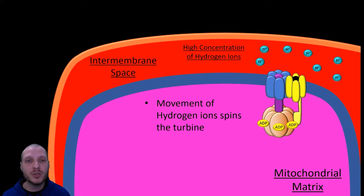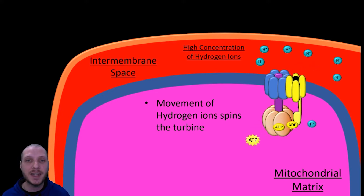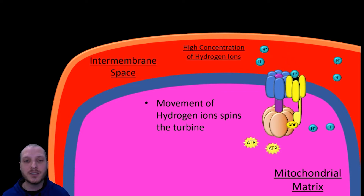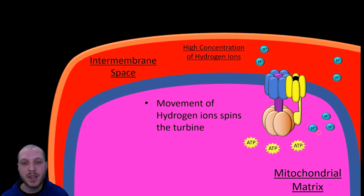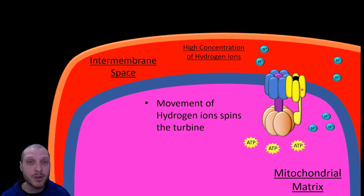Instead of water, we use a high concentration of hydrogen ions on one side of the inner membrane. When an opening is created, these hydrogen ions naturally move through it, powering the turbine and adding that phosphate molecule to ADP to recharge the battery. You'll notice a plus sign on these hydrogen ions indicating a positive electrical charge. Whenever charged particles move, electrical current flows with them — and that electrical charge is what ATP synthase uses to power the process.